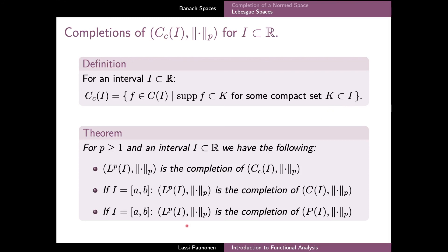Finally, LP is also the completion of the much smaller space of polynomials defined on the closed interval I. This is a consequence of the second part of the theorem and also of the Weierstrass approximation theorem, which implies that the space P of polynomials is dense in the space of continuous functions with respect to the P-norm. And because C is dense in the space LP, this also makes the set of polynomials dense in the Lebesgue space LP.